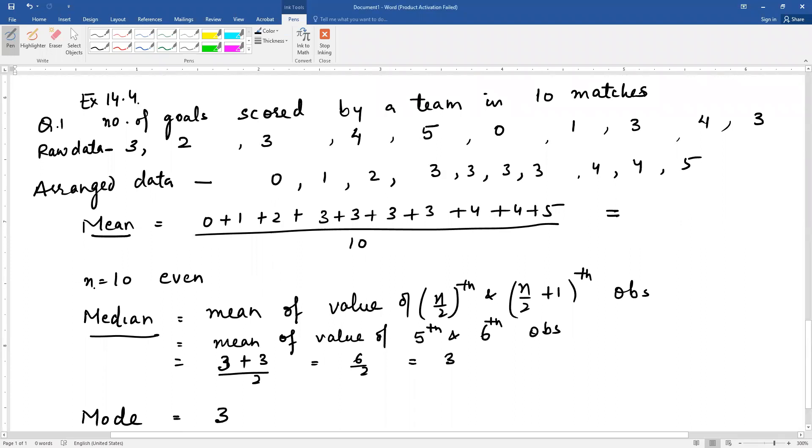Now since these are 10 observations, n is 10. That means 10 is an even number. So what will be the median? Mean of values of... we just read the formula. If n is even, then the two middle values, that is n/2th and (n/2 + 1)th observation. n is 10, so 10 by 2 means 5th observation, and n/2 + 1 means 5 plus 1, that is 6th observation.